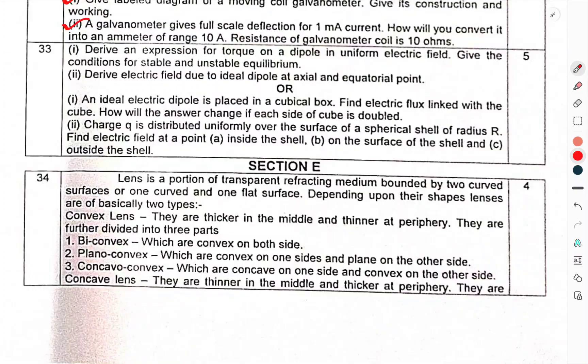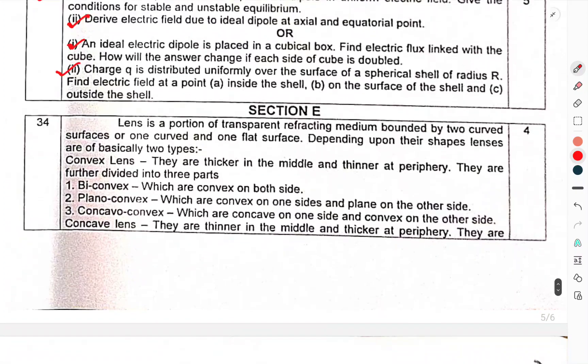Question 33: Derive an expression for torque on a dipole in uniform electric field. Give the conditions for stable and unstable equilibrium. Derive the electric field due to ideal dipole at axial and equatorial point. Or, an ideal electric dipole is placed in a cubical box. Find electric flux linked with the cube. How will the answer change if the side of cube is doubled? Second part: Charge Q is distributed uniformly over the surface of a spherical shell of radius R. Find electric field at point A inside the shell, B on the surface of the shell and C outside the shell.